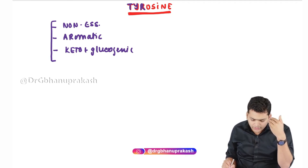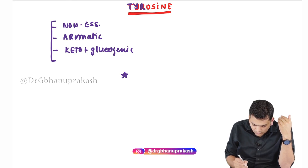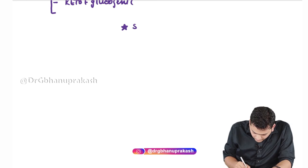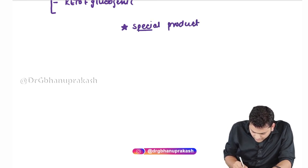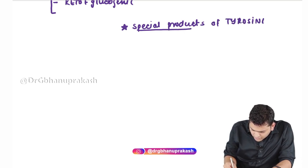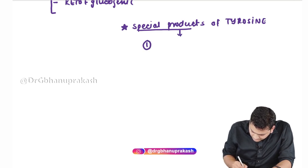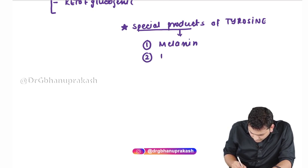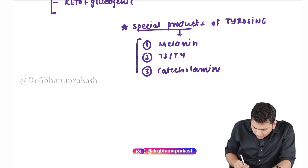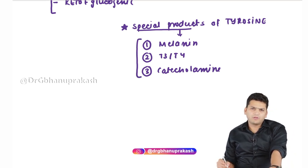When it comes to tyrosine metabolism, tyrosine is required to produce a few special molecules in the body. There are three special products of tyrosine: the first is melanin, the second is the thyroid hormones T3 and T4, and the third is the catecholamines.